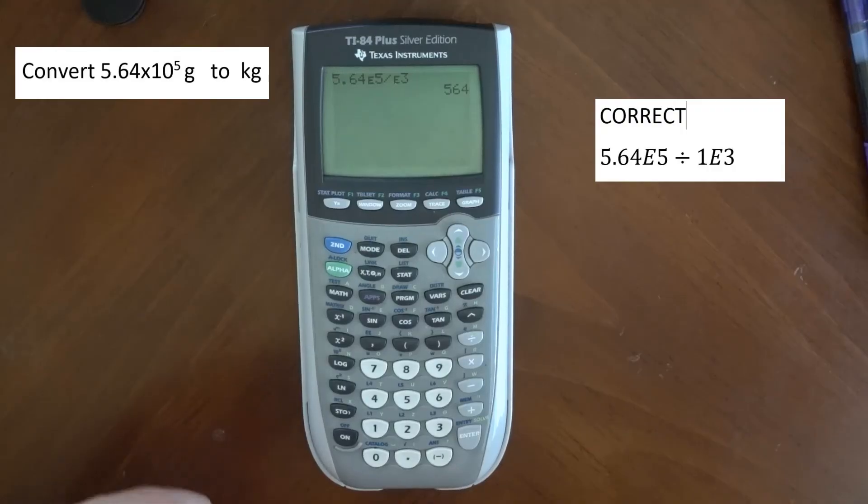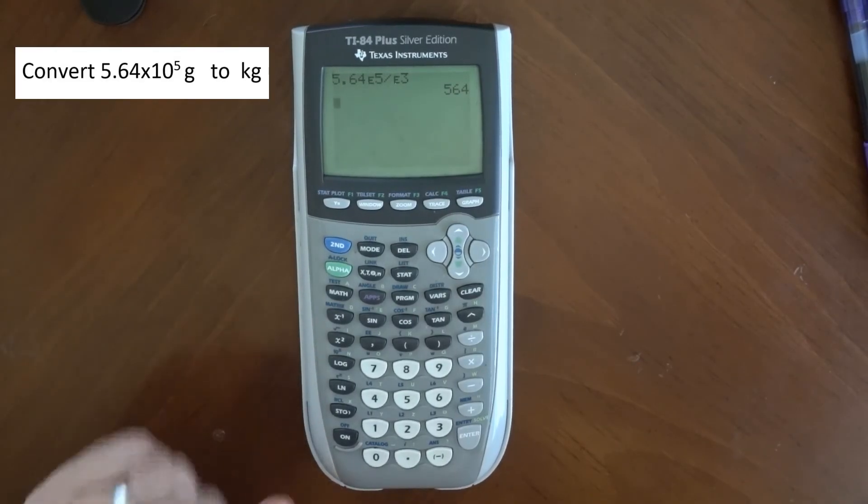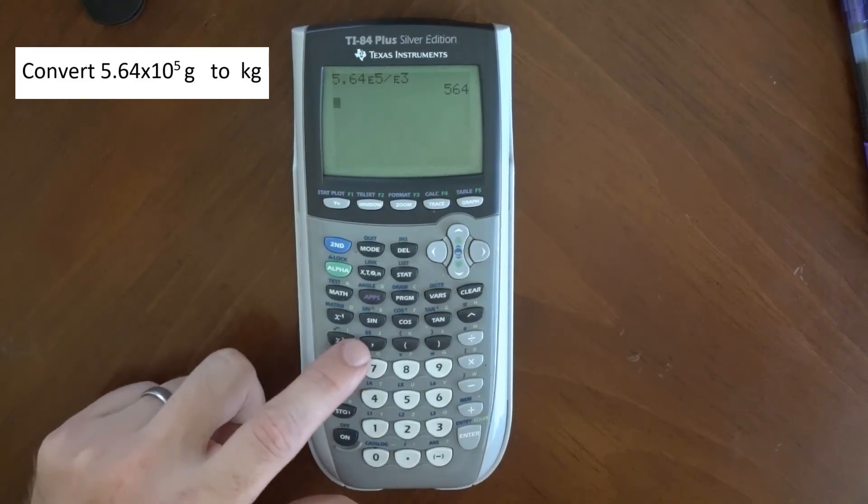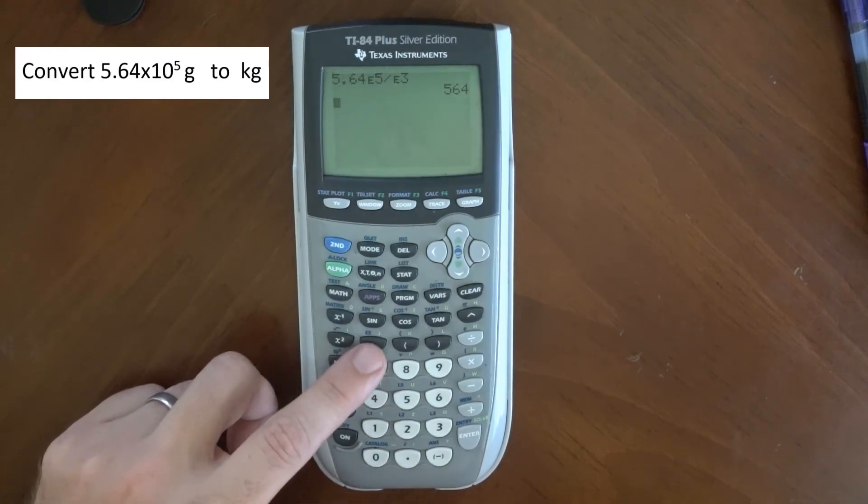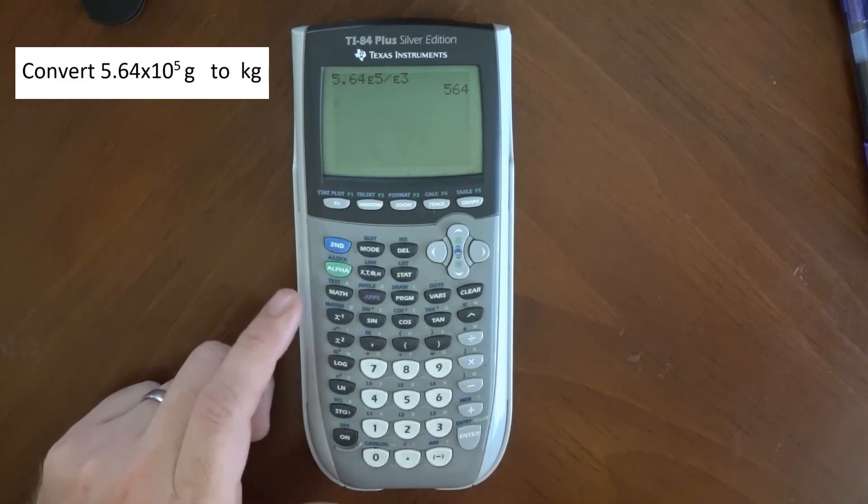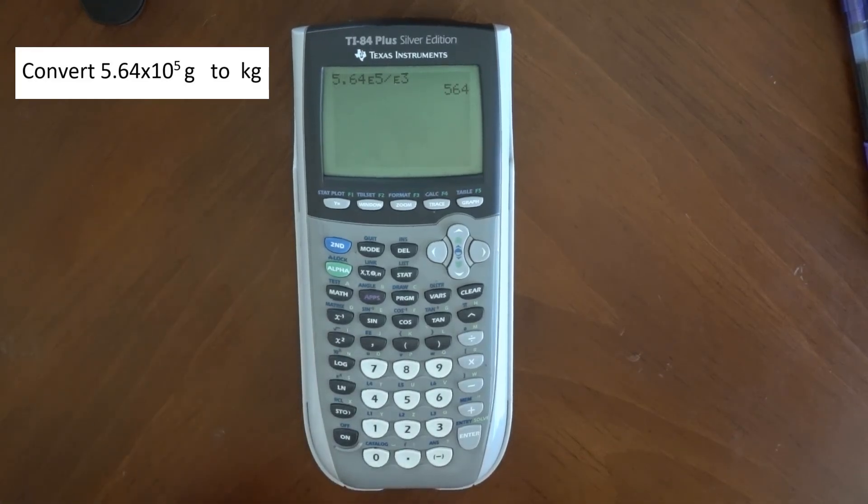If you go through and do these things correctly and put everything into your calculator correctly, you should get it right. Please get in the habit of doing scientific notation using that EE or EXP button. Look for it on your calculator. If you have a question, you can take a picture of your calculator and send it to me.